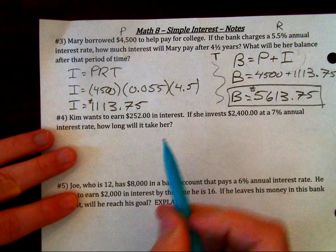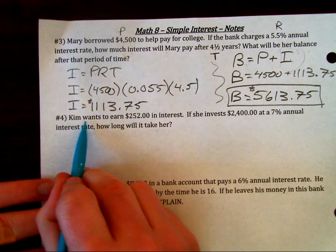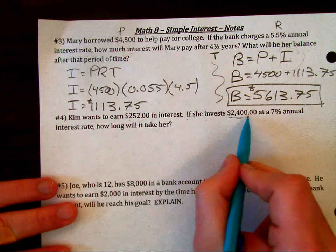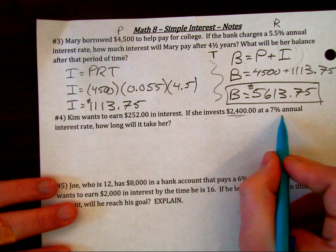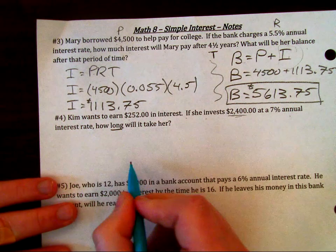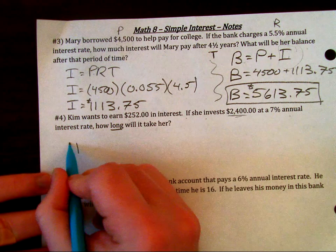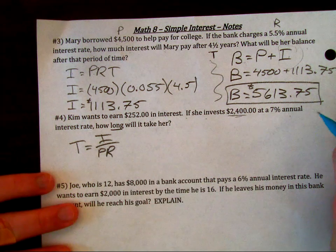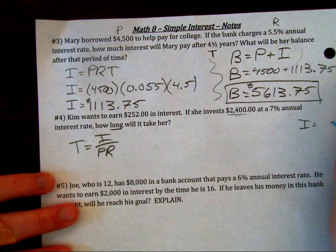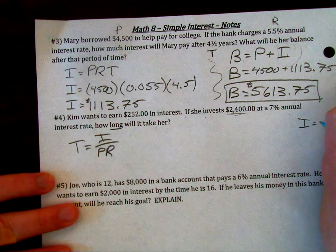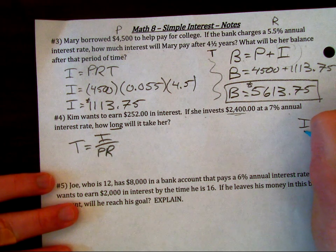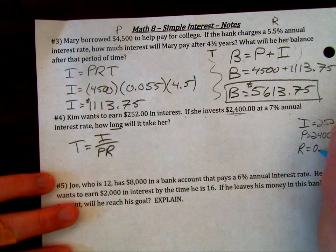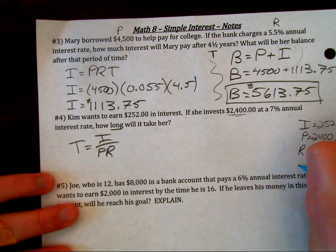The last one I'll do in this video: Kim wants to earn $252 in interest. If she starts with $2,400 at an annual rate of 7%, how long will it take her? Now we're looking for time. T is equal to I over P times R. I equals $252, the principal is $2,400, and the rate is 0.07.